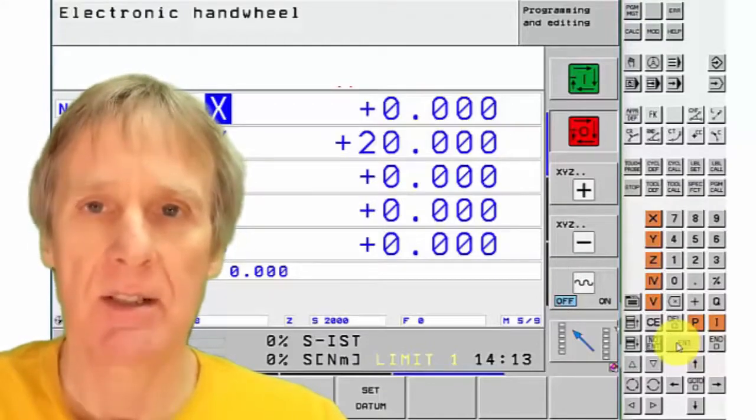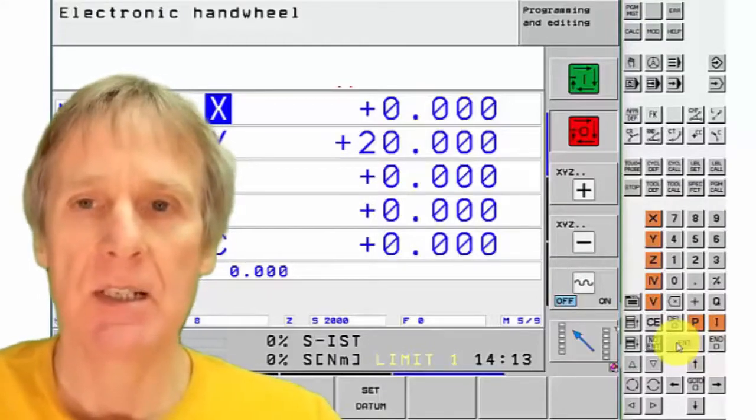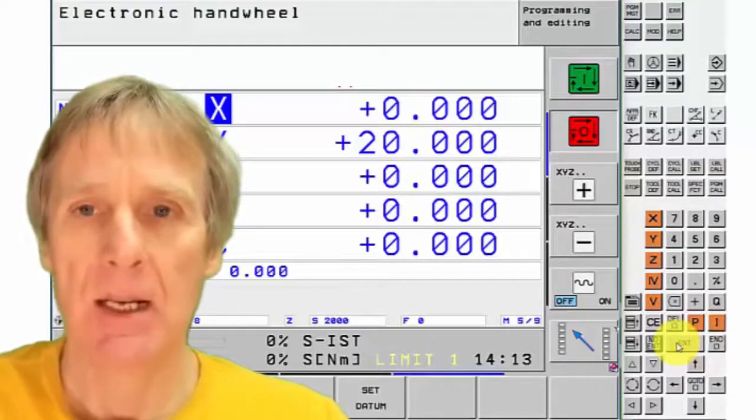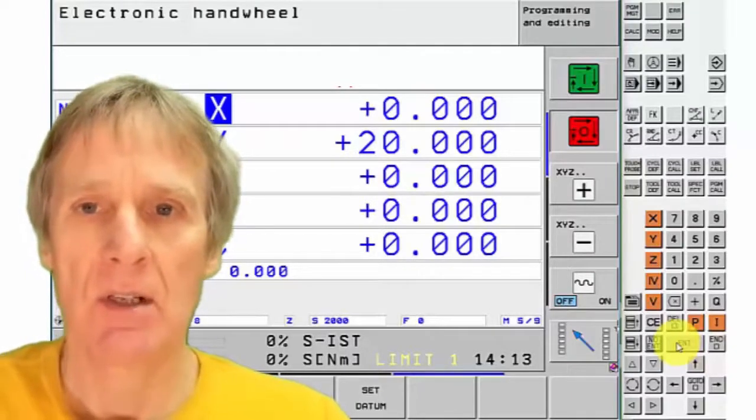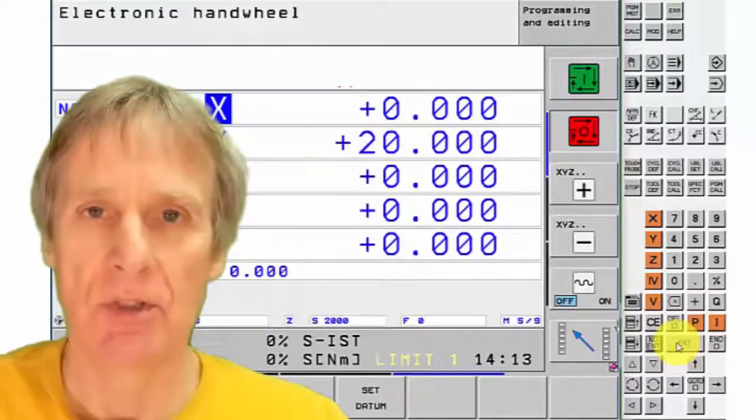Once this position is in the machine, then the machine knows where your datum is. If you want to move this, you've got to then use a datum shift to adjust it.